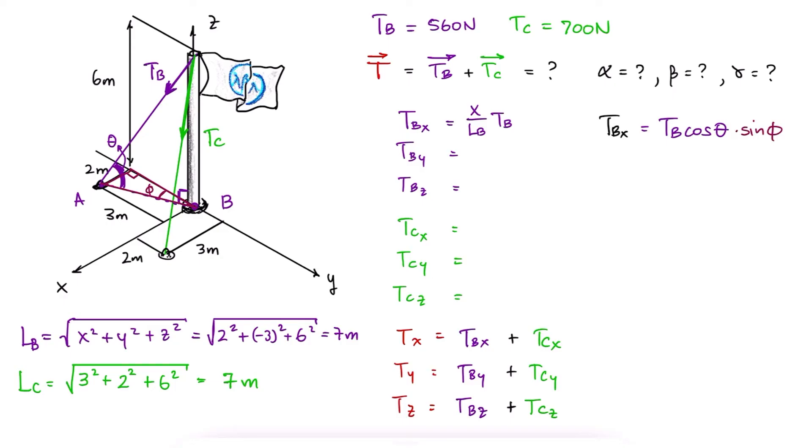Using the lengths that we were given, we easily see that cosine of theta is ab over the length of the cable 7, and that sine of phi is the length in the x direction 2 meters over the hypotenuse ab. This proof can be generalized for the other five components of the forces.